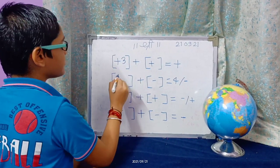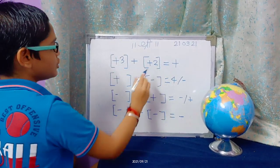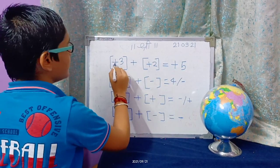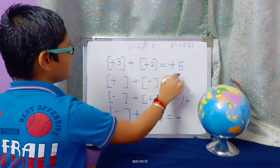Plus 3 plus plus 2. So 3 plus 2 is 5. So here is plus side, so it would be plus 5.